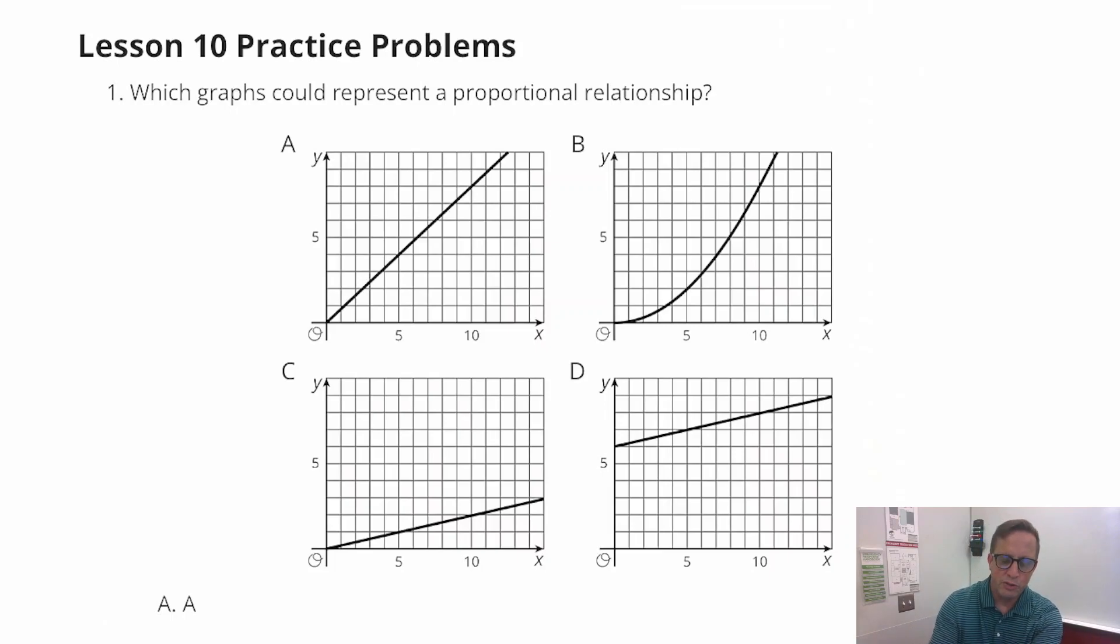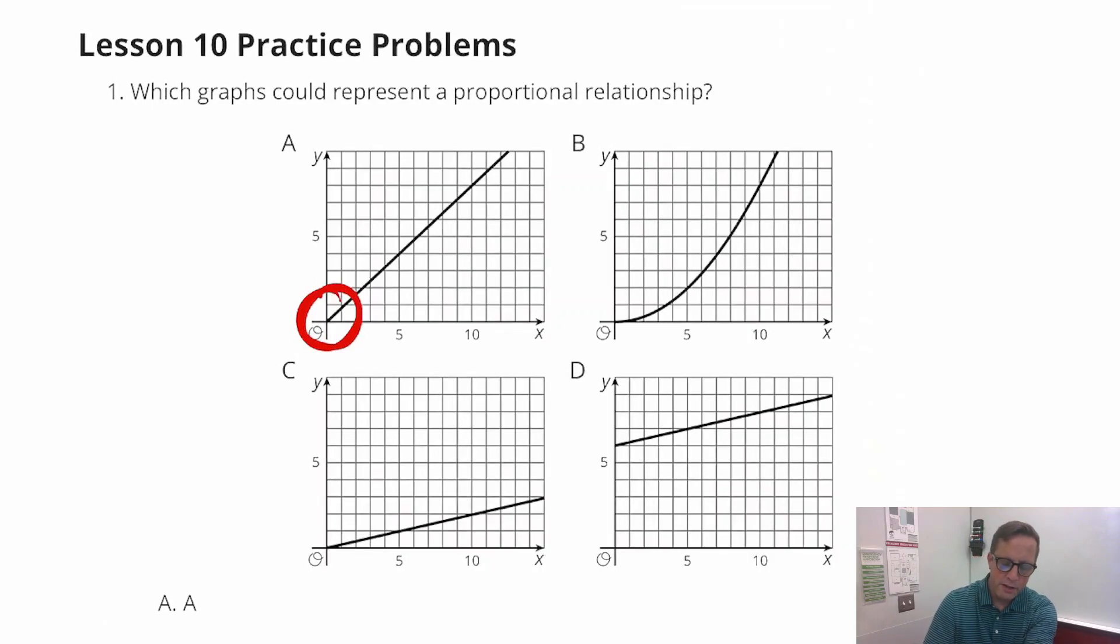It is so easy. If it starts at the origin and if it is linear, meaning it's a straight line, then it's proportional. And it's got to be both. It can't be just one or the other. It's got to be both. If it starts at the origin, like this one does, and it's linear, this one's also linear.